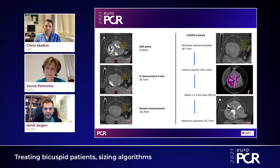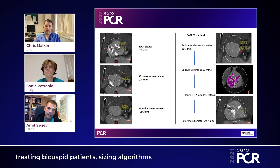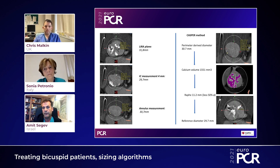Thank you very much, Sonia. This is a great example of a specific bicuspid anatomy. Beside the cross-sectional assessment of the morphology of the valve, in these cases it is crucial to assess the longitudinal measurements. In one-third of patients the anatomy is tubular, as in tricuspid valve, but in the majority of cases you have two appearances of a bicuspid valve. The most important and most common is what we call a tapered anatomy, meaning you have, as shown in this case, a large annulus — in this case 30.7.